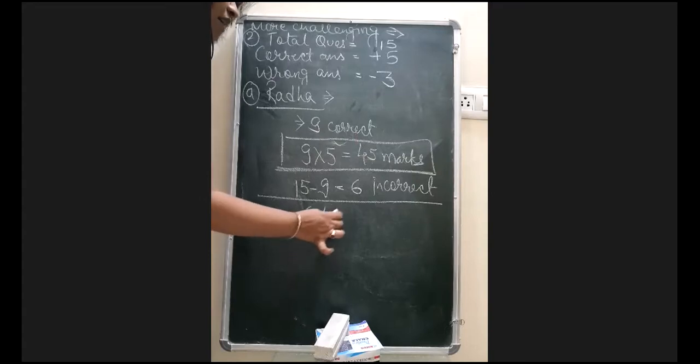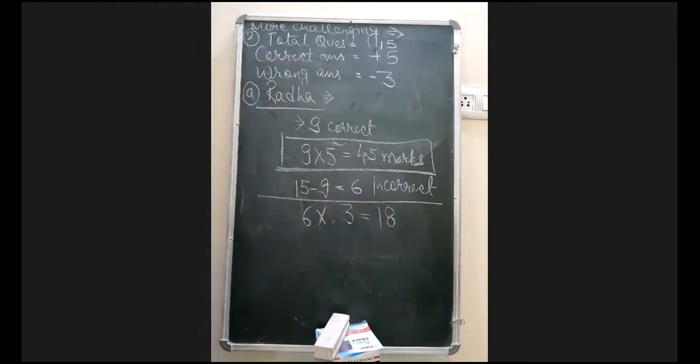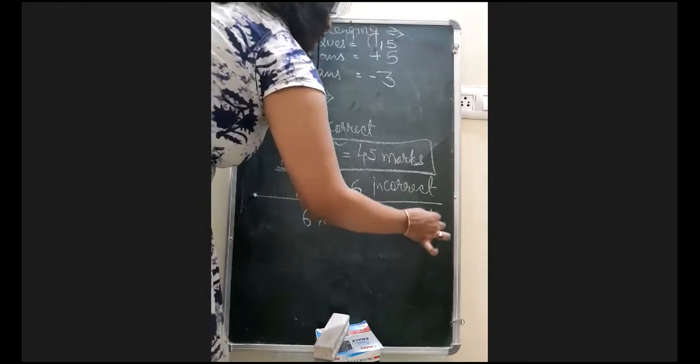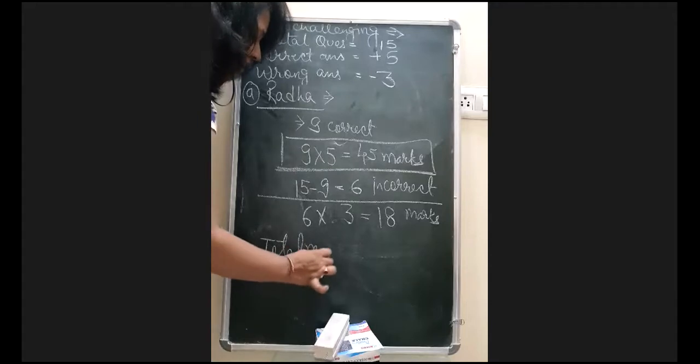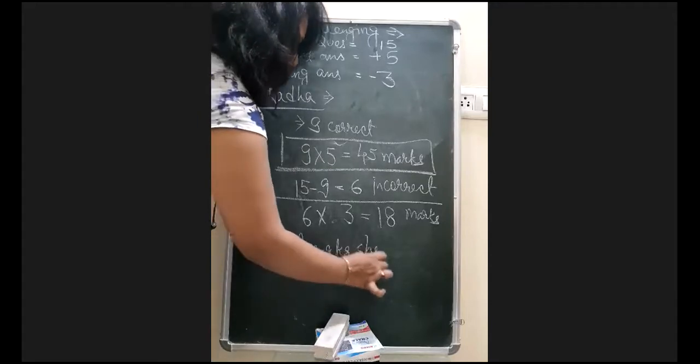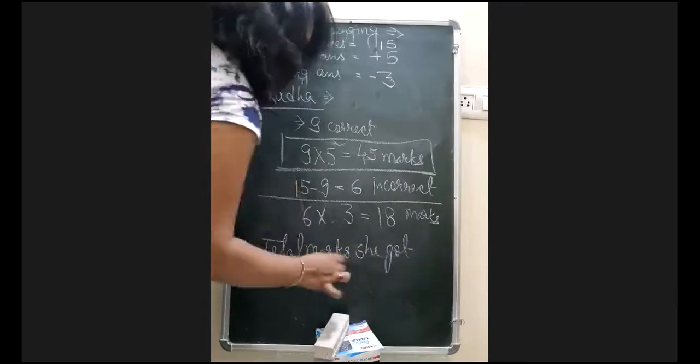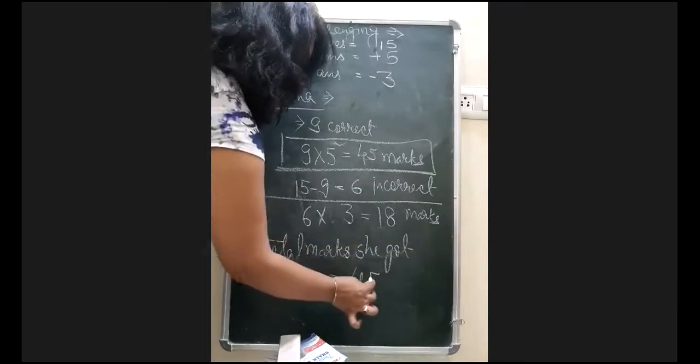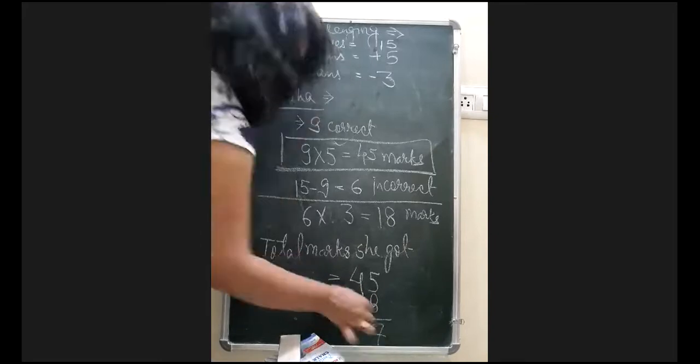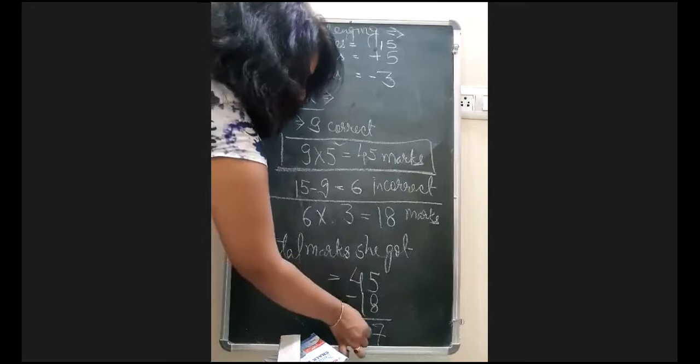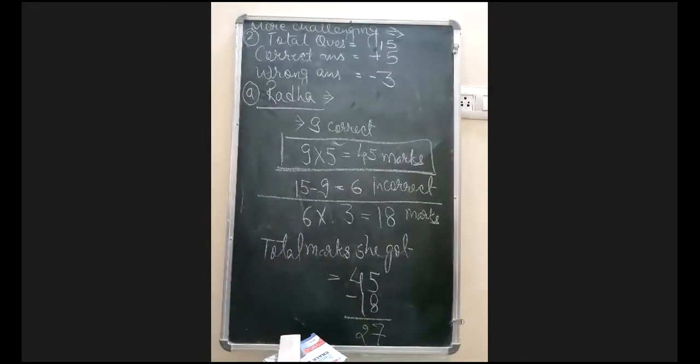But 6 are wrong. So 6 into minus 3, or 6 into 3, whatever you want to do it. 6 into 3 which will give us 18 marks. So now she will get, now we have to subtract 18. Yes, correct. Total marks she got will be, here it was 45, then minus 18, and when you will subtract 15 minus 8, it will give you 7, and 3 minus 1, it will give you here 2. So she will get the marks 27, not 45.